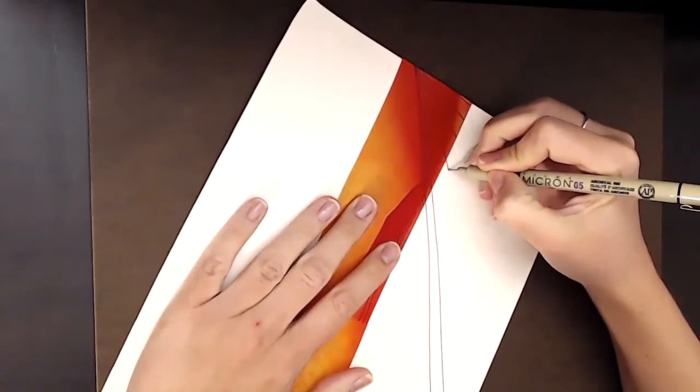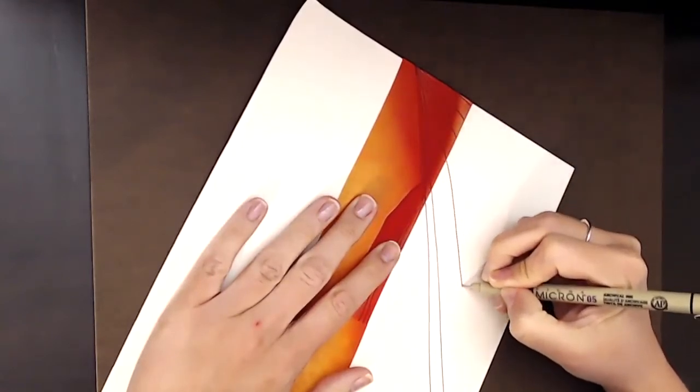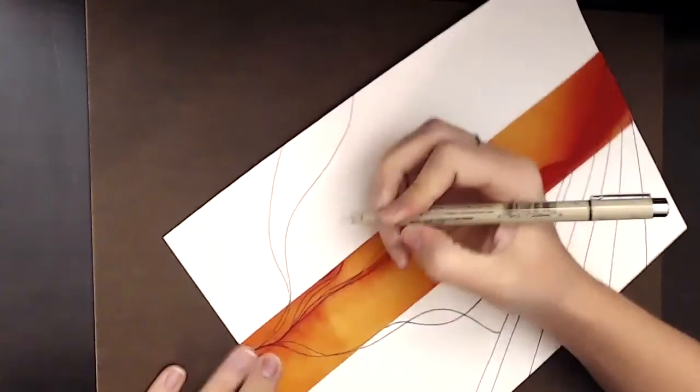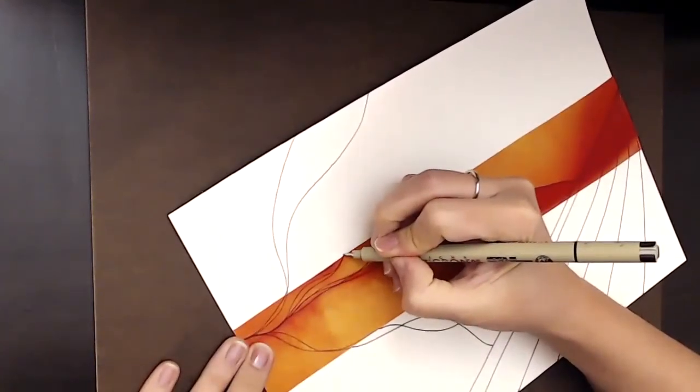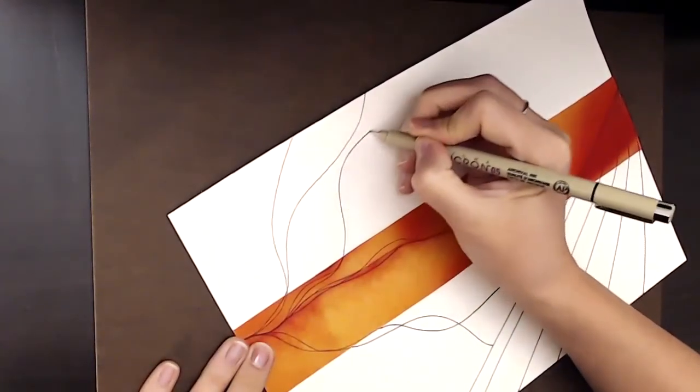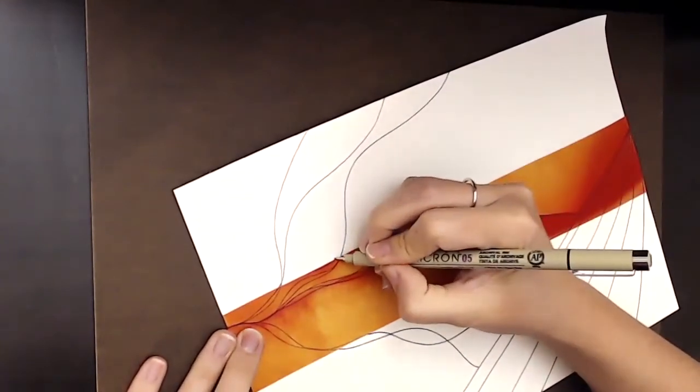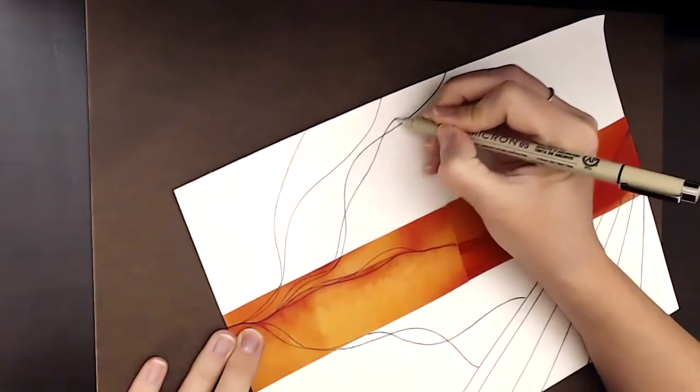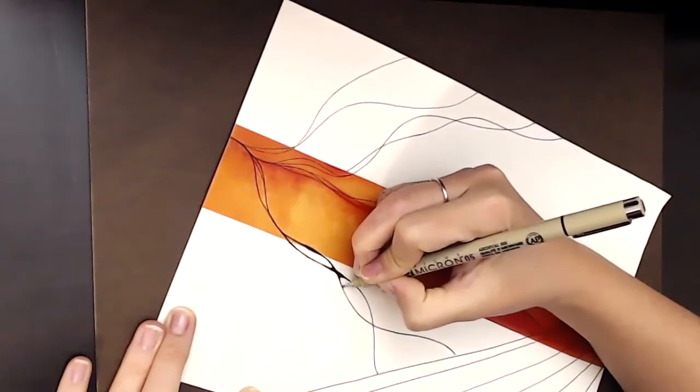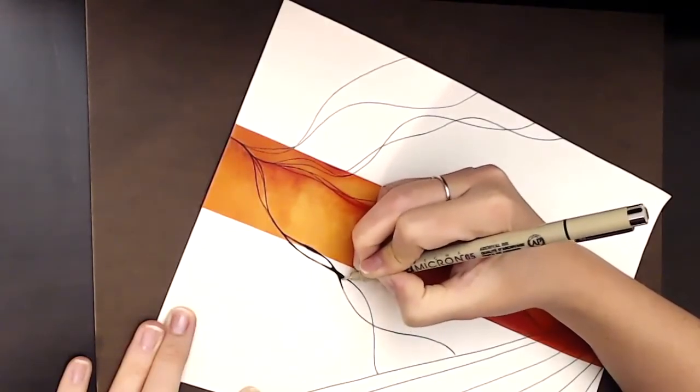I've showed this technique a little bit on the channel before—these organic lines, and then anytime the lines cross, taking a moment to fill in and kind of shadow in those sections. That is also known as neurographic art, not to be confused with neurographica, which is a more in-depth process.